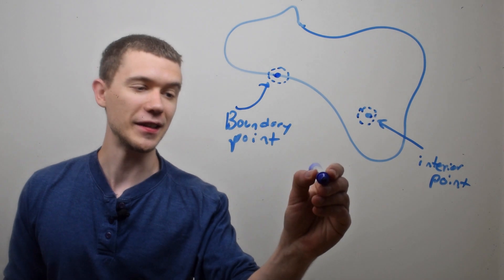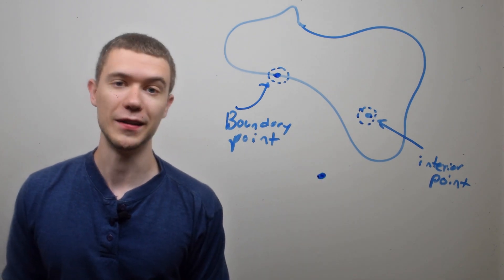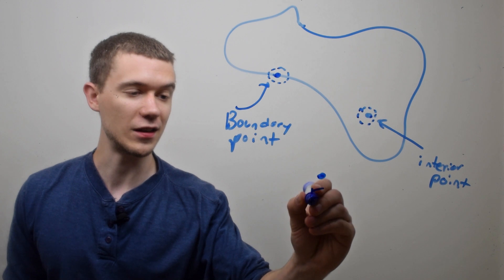And as you may have guessed, if I have a point that's not on the boundary and not an interior point, we call this an exterior point.